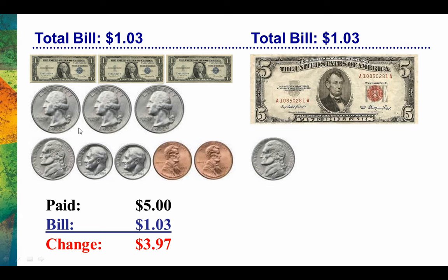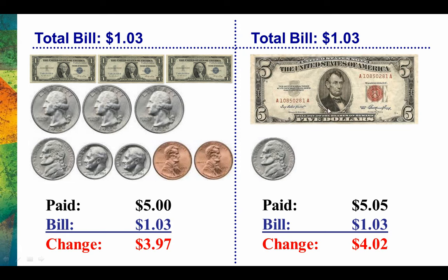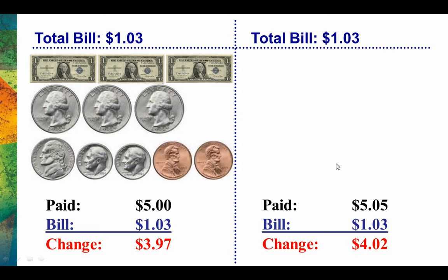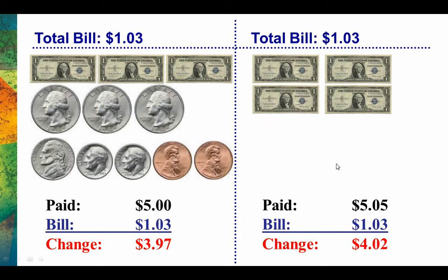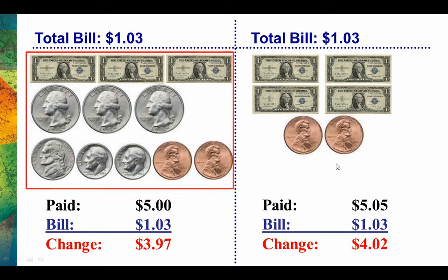Now let's look at the next situation. Again, the bill is $1.03, and the customer has $5.05 in their pocket. In this situation, they're going to pay $5.05 — they give us everything that was in their pocket. If the bill is only $1.03, we're going to owe them $4.02 in change. They give us the $5.05, so that's gone, and now we need to count back $4.02: $4, $1, $2. So now it's easy to see that by strategically paying with different denominations and different coins, we can limit the amount of change we have to carry around.